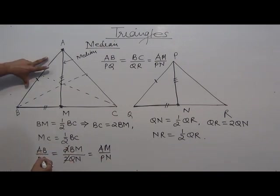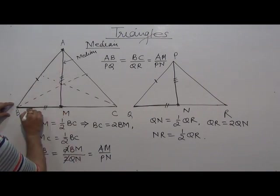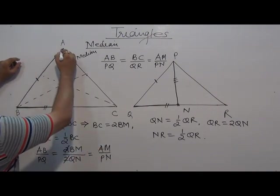What are these sides? AB, BM - BM is this, this one BM. AM, AM is this.